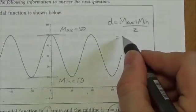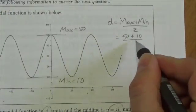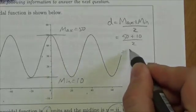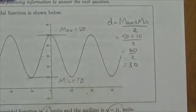Now for our D, our max is 50, our min is 10. So 50 plus 10 is going to be 60 divided by 2, and so my answer is 30.